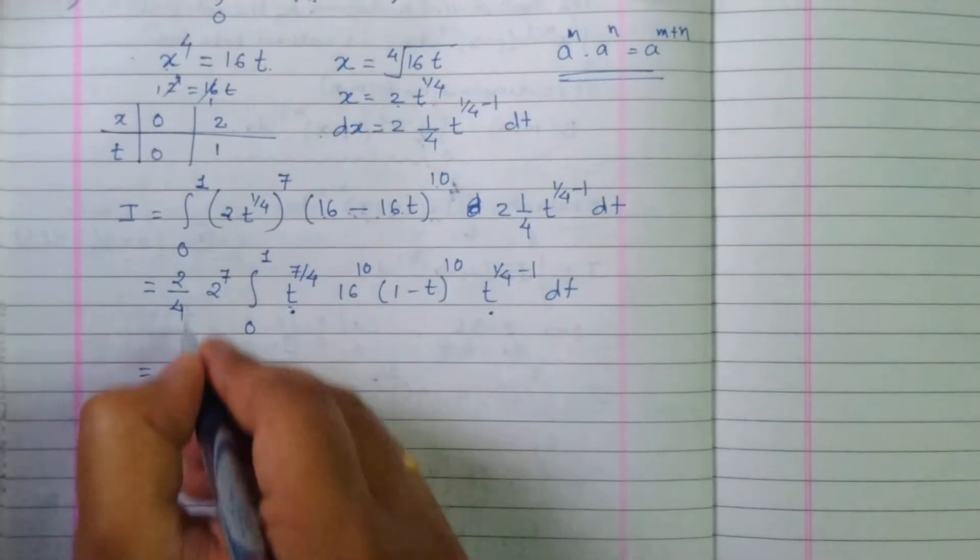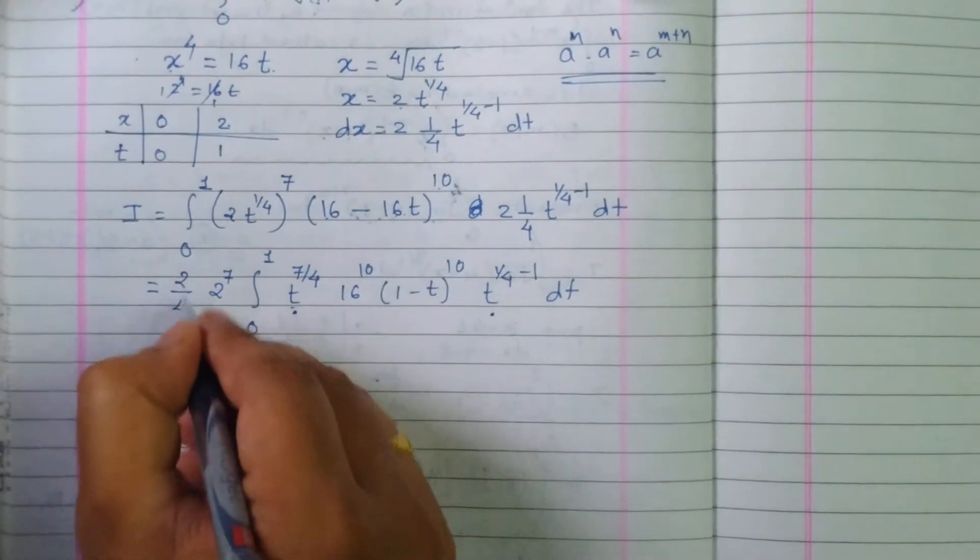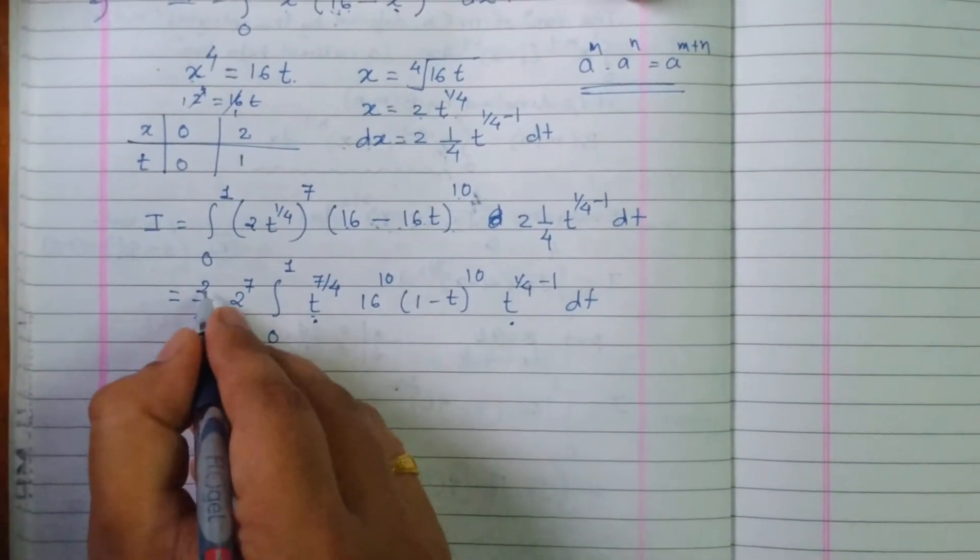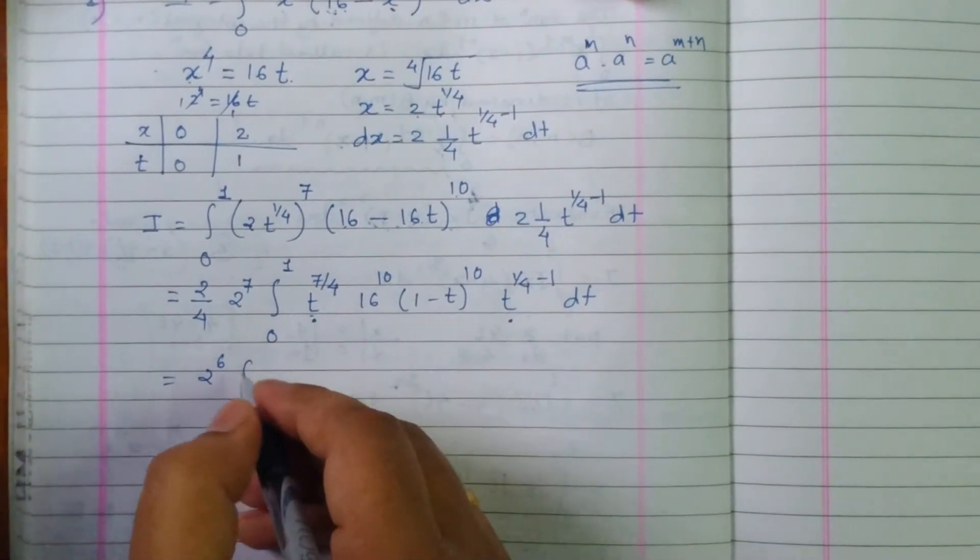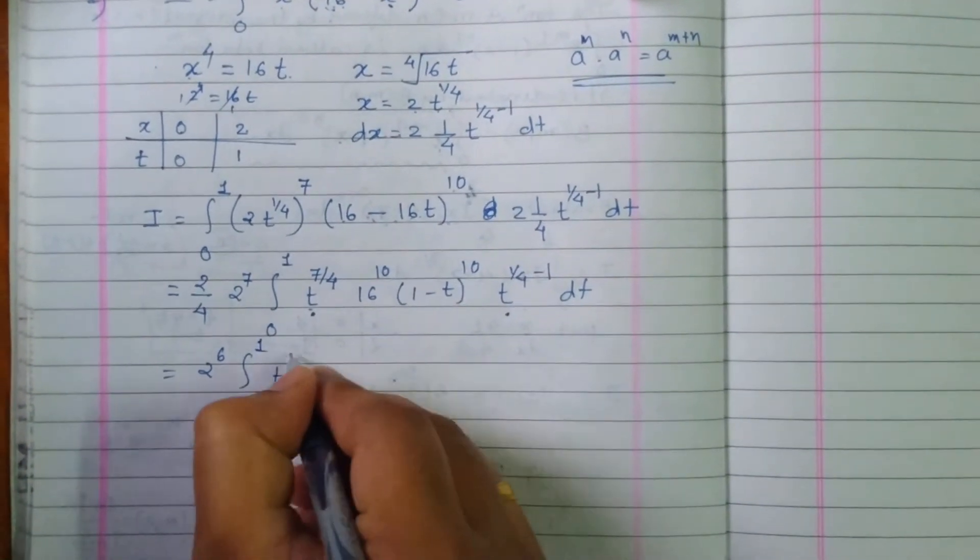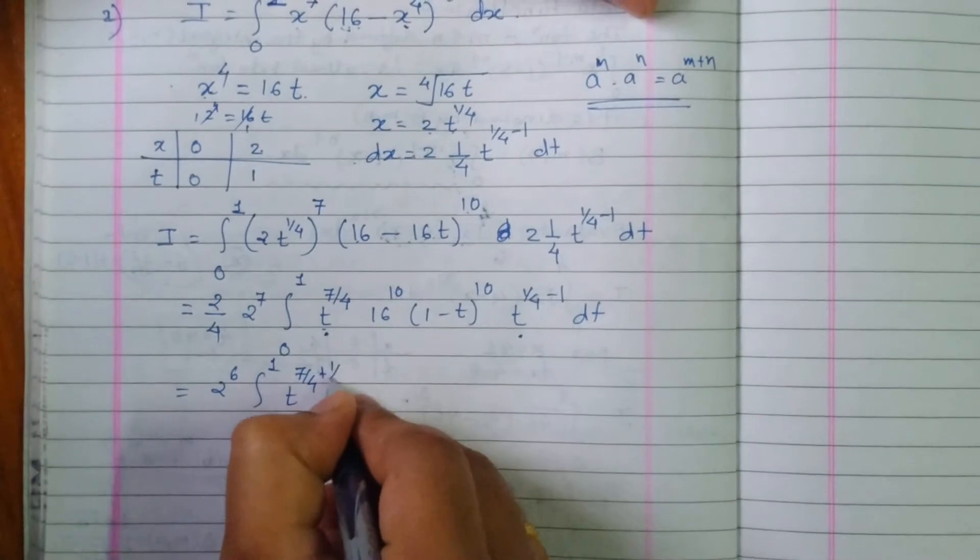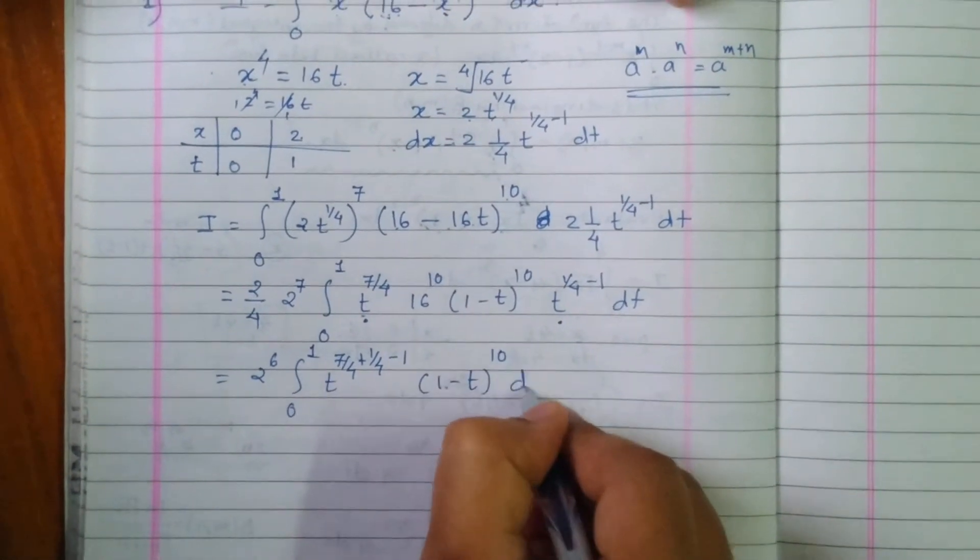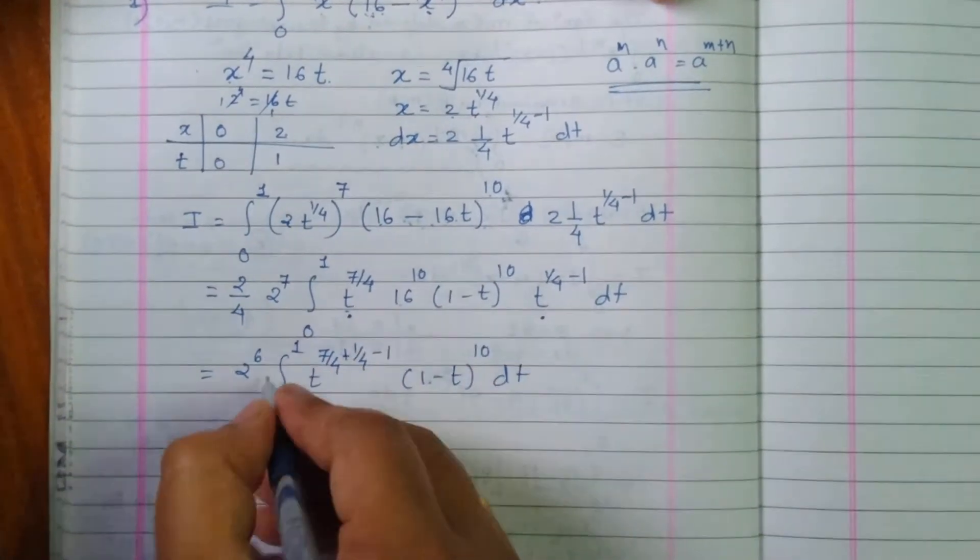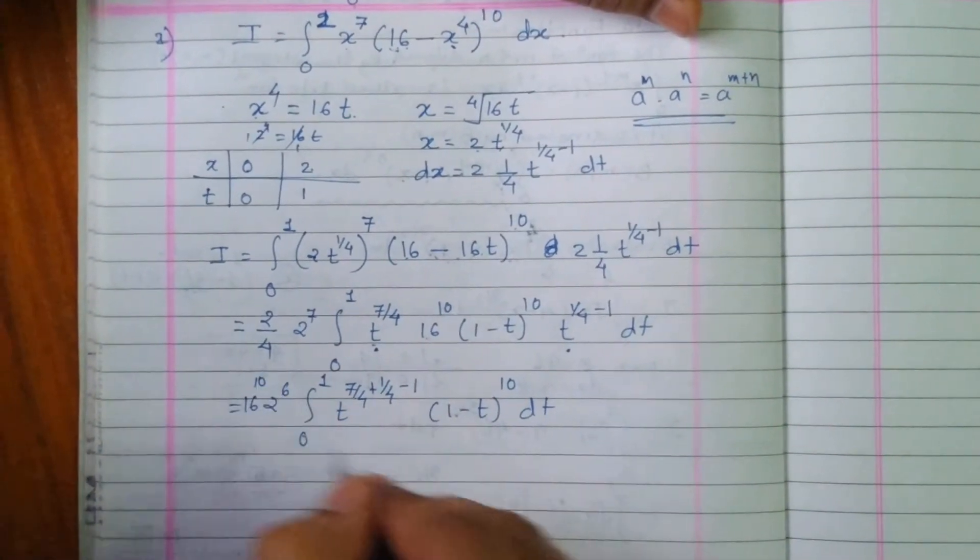So this equals 2 raised to 6, integration from 0 to 1, t raised to 7 by 4 plus 1 by 4 minus 1, times 1 minus t raised to 10, dt. I am taking this 16 raised to 10 outside of the bracket.